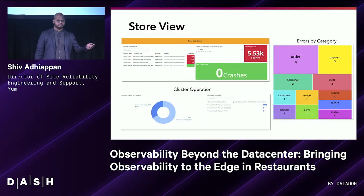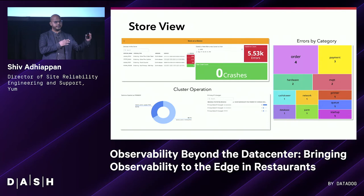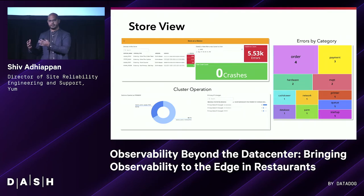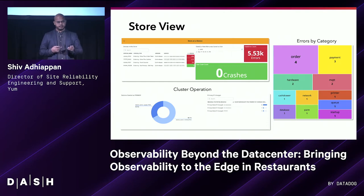Further down, we built the store-level view. The store-level view lets us drill down: okay, we have certain restaurants having issues in a certain region — let's find out what exactly is going on in the store. Is it payment-related issues, hardware device issues, networking issues? We're trying to pinpoint exactly what's going on. We were able to project that information out, including the cluster operation and the health of the cluster overall.